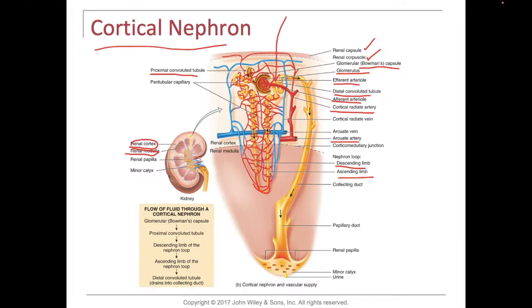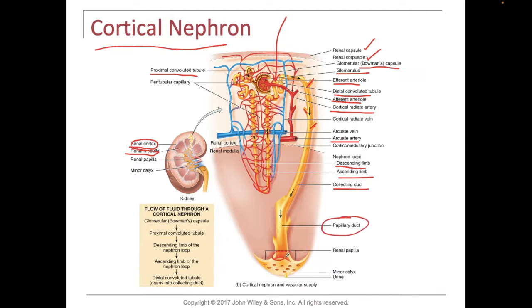After the distal convoluted tubule, the filtrate comes out through connecting ducts which lead into the collecting duct. These small connecting ducts come from other nephrons and eventually lead into the collecting duct. Here's the papillary duct and here's the renal papilla, followed by the minor calyx.